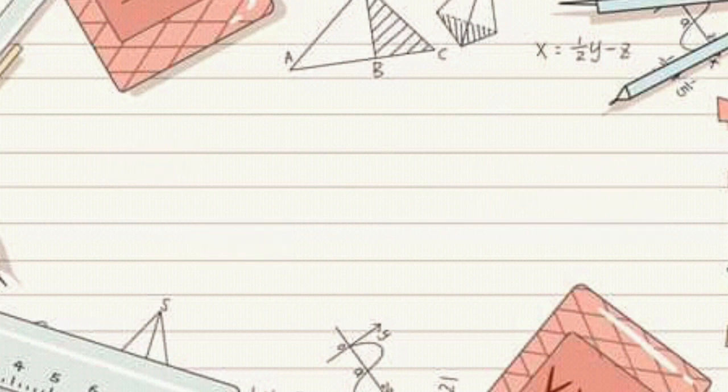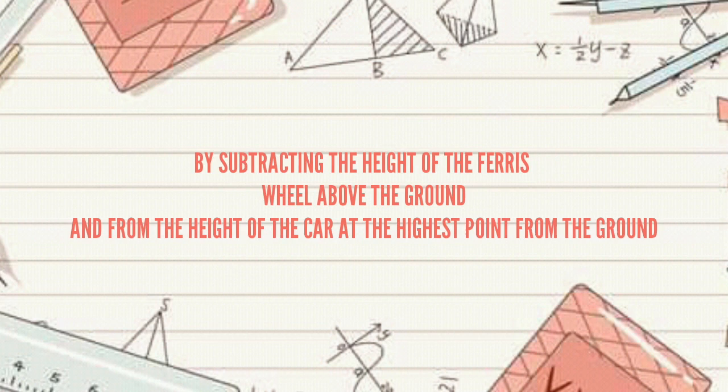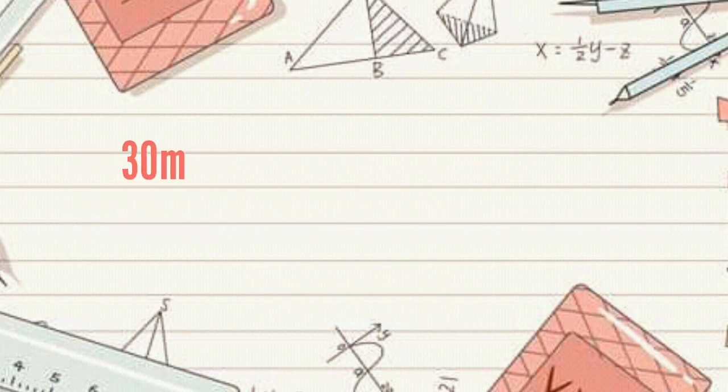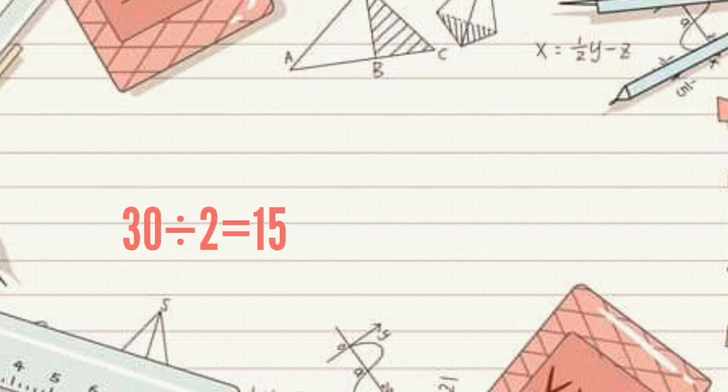First, we will determine the diameter of the ferris wheel by subtracting the height of the ferris wheel above the ground from the height of the car at the highest point. Thus, D represents the diameter. D = 31 - 1 = 30 meters. So, 30 meters is the total diameter of the ferris wheel. Since we now have the diameter of the ferris wheel, we will divide it by 2. 30 divided by 2 equals 15.